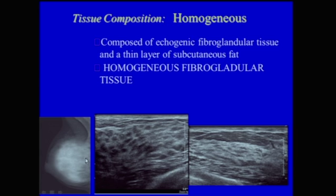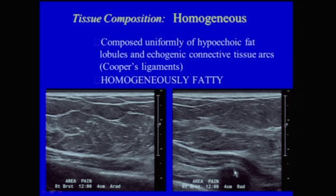Ultrasound can also determine the tissue composition of the breast. Here you can see a mediolateral projection of a mammogram showing a very dense breast, correlating with the adjacent ultrasound in perpendicular projections. The skin layer is seen through echogenic lines separated by a hypoechoic area, beneath that is subcutaneous fat, and then very echogenic tissue with tubular hypoechoic structures representing ducts. This is a typical case of homogeneous fibroglandular tissue. The breast could also be homogeneously fat, composed uniformly of hypoechoic fat lobules and echogenic tissue arcs, which are the Cooper's ligaments.